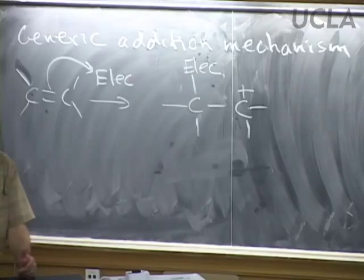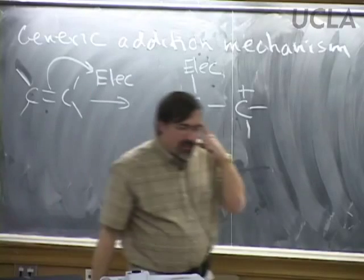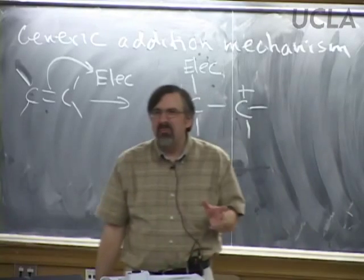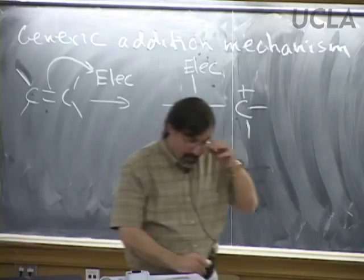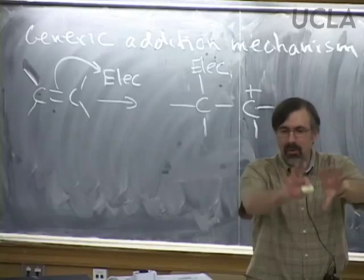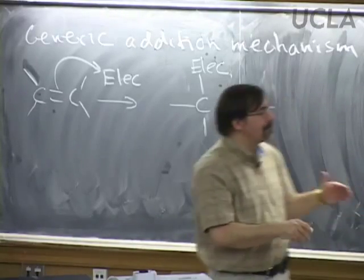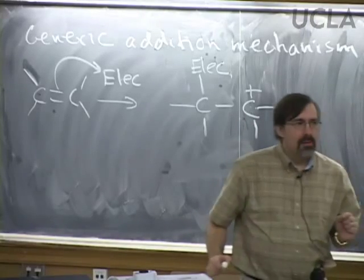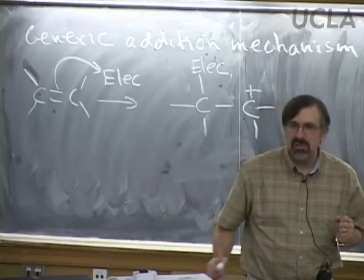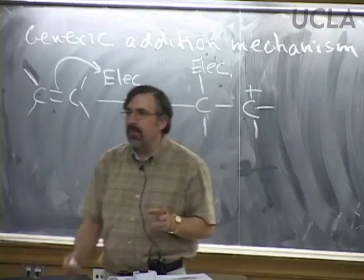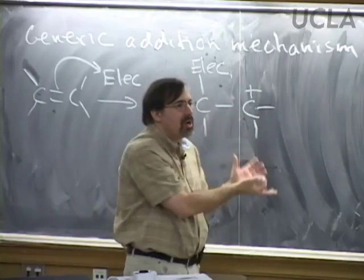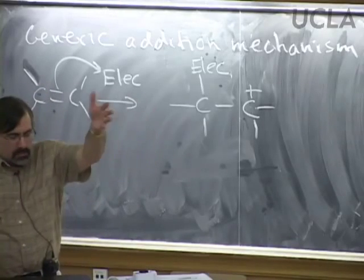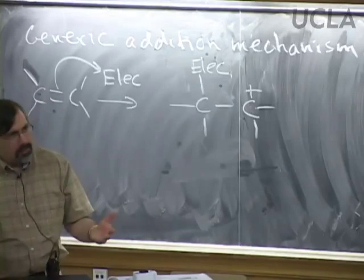At this point, every time you see a carbocation in a reaction mechanism regardless of where it comes from, the first thing you think about is resonance. In this generic case we don't know if resonance applies, so we move on. Then we think about carbocation fates: the carbocation could potentially rearrange, capture a nucleophile, or lose a proton. We're talking about addition, so losing a proton — which makes a pi bond — doesn't move us forward. That leaves rearrangement (maybe) and capture a nucleophile.